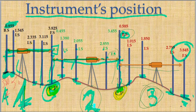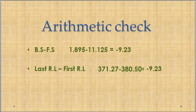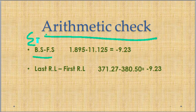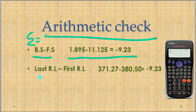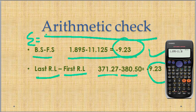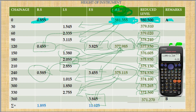After completing the table, apply the arithmetic check. The summation of all backsights minus the summation of all foresights must equal the last reduced level minus the first reduced level. If those two values match, all your answers are correct.